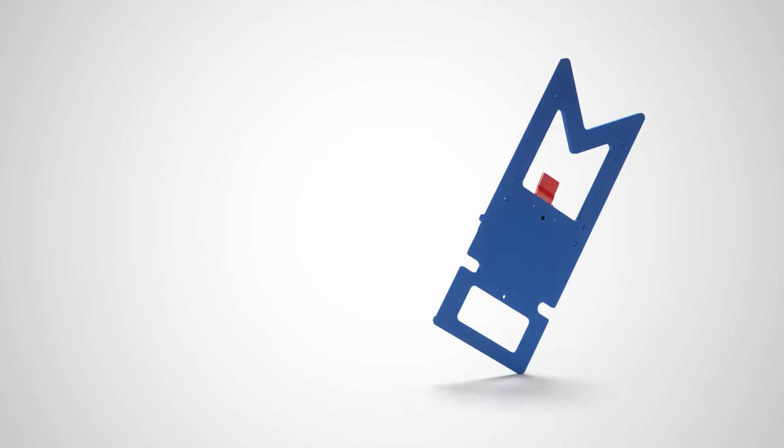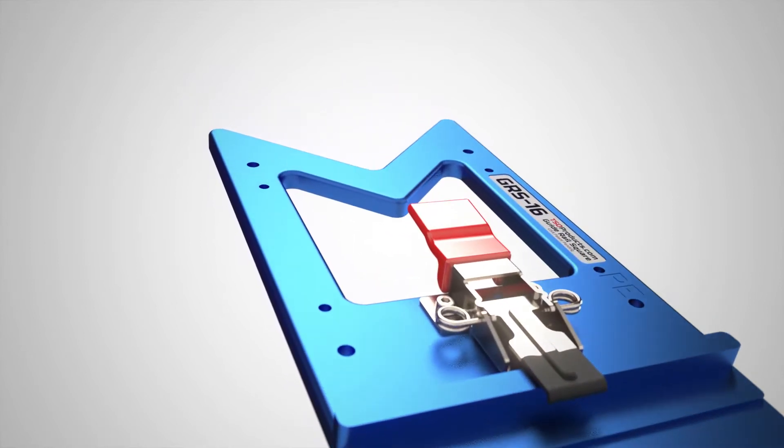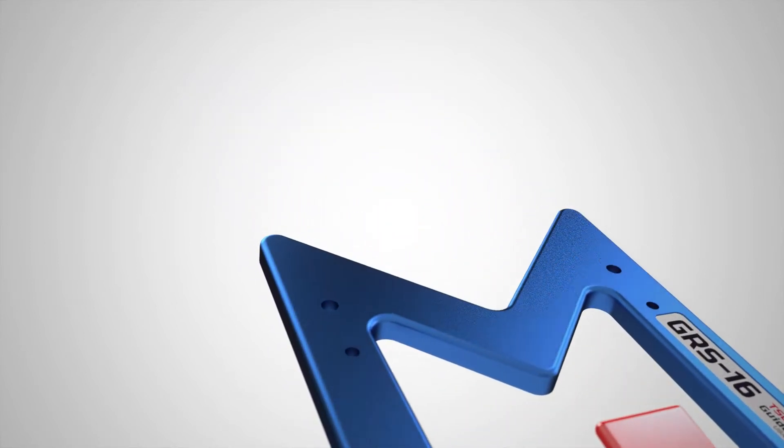Made without compromise, the GRS16 PE is CNC machined from a single piece of 6061 T6 aluminum and anodized for a non-marring, durable finish.